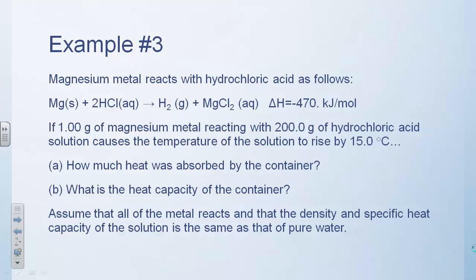This last example is probably the most complicated one we've done today. We're told that we're doing a reaction in hydrochloric acid — we're going to add magnesium metal to this acid. When we add the specified one gram amount of magnesium metal to 200 grams of hydrochloric acid, the temperature of the solution increases by 15 degrees Celsius. This time, we're not so lucky as to assume the container absorbs no heat. In fact, we want to find the heat capacity of the container itself. You can think of this as showing how we might calibrate a calorimeter so that we can use it again tomorrow for a different reaction.